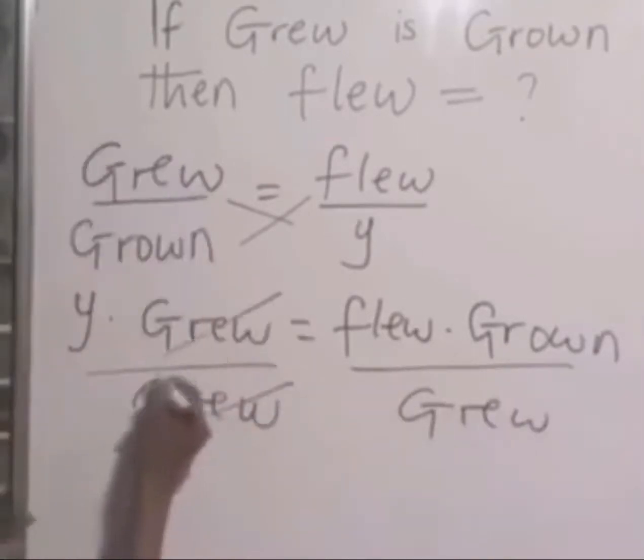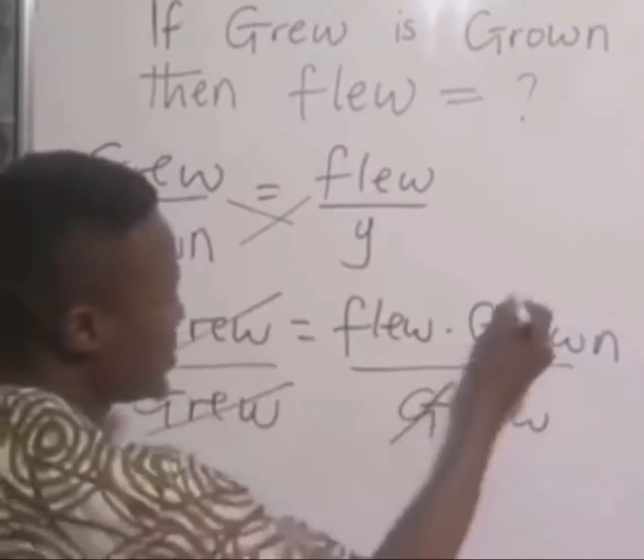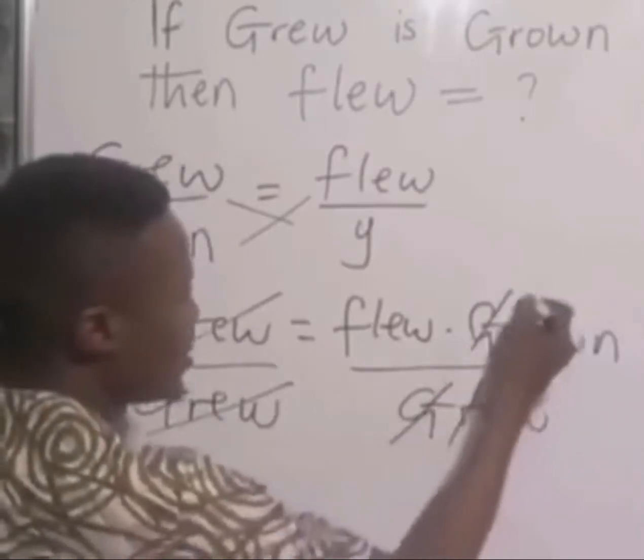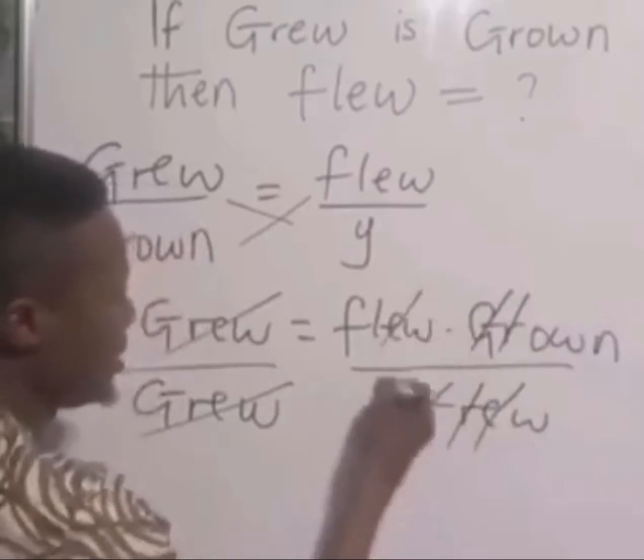So that grew will cancel grew. Here, G will cancel G, R will cancel R, E will cancel E.